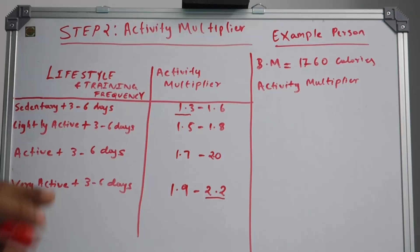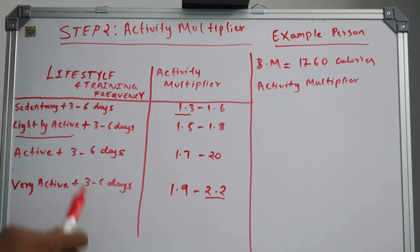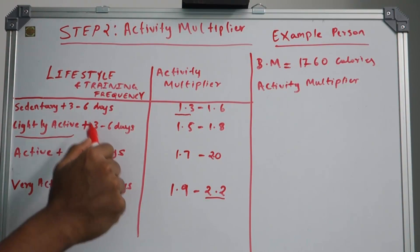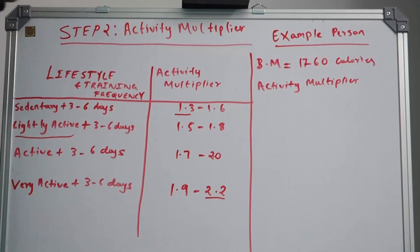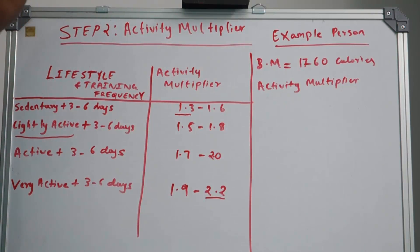I also consider myself an engineering student, so I am lightly active. I train 3 to 6 days a week—I train 5 times a week with weights. The reason I included lightly active is because I do perform some cardio as well.